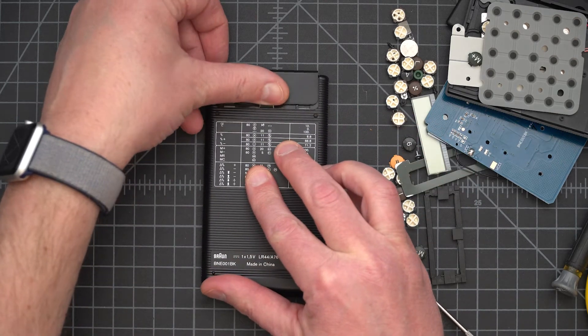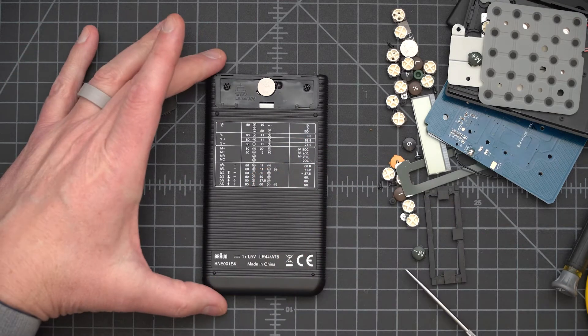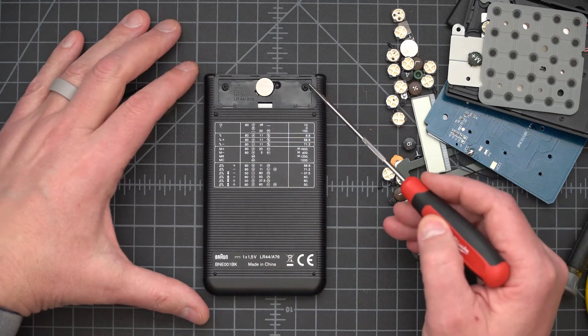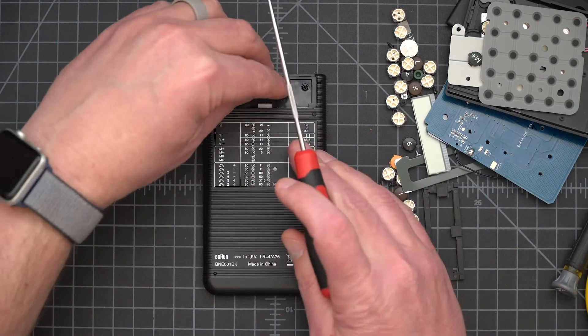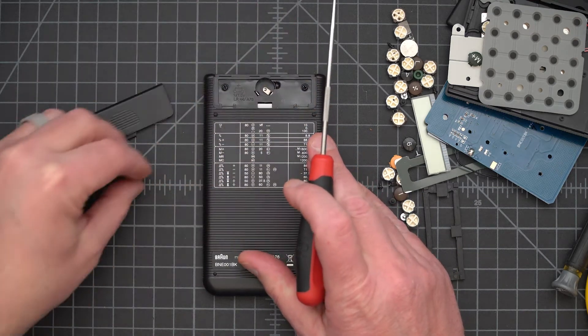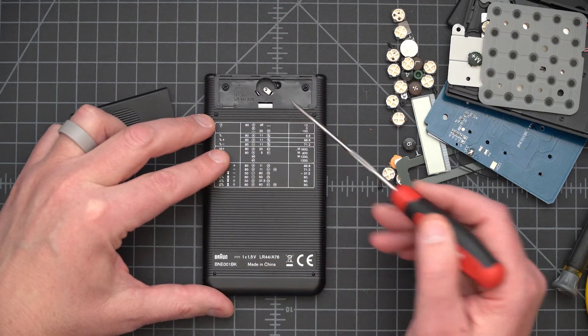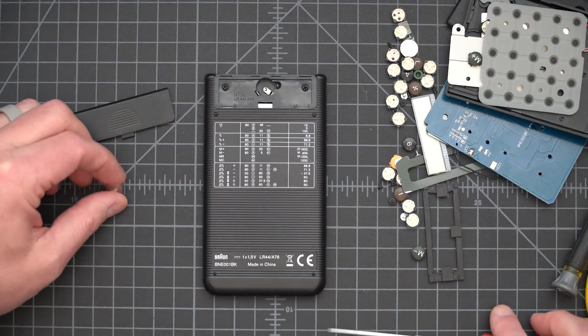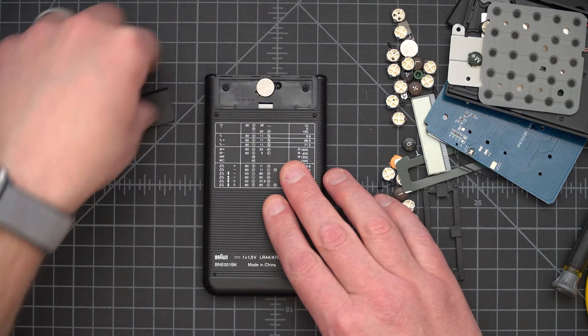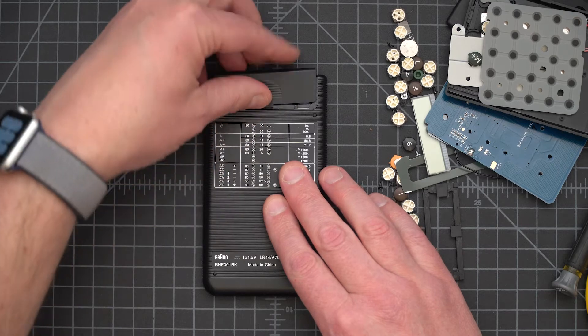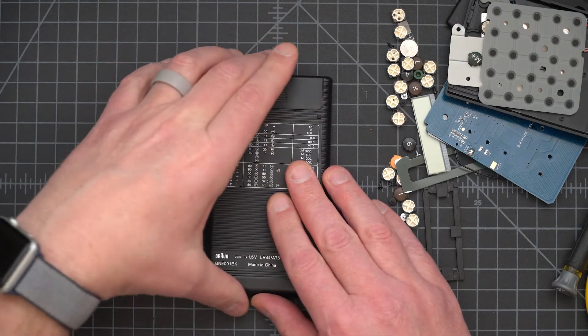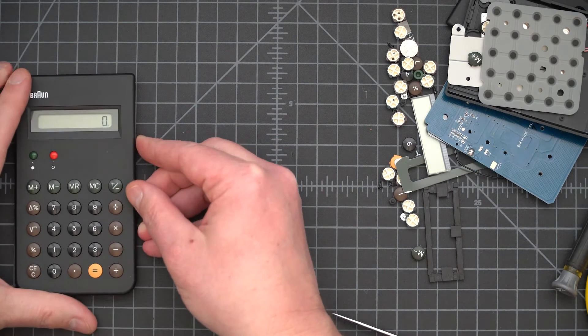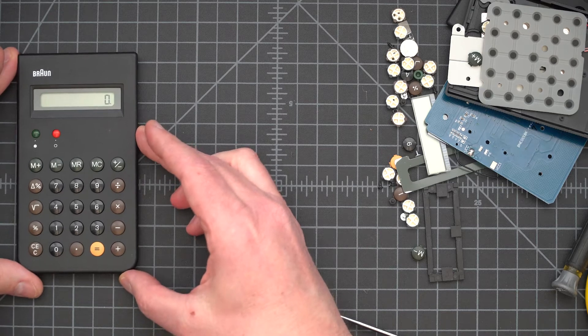Here we see the battery door. Under the battery door we can see two screws plus the battery, and then we can see the battery contacts that are in there. So pop this thing back in there, and this is our completed version of the calculator.